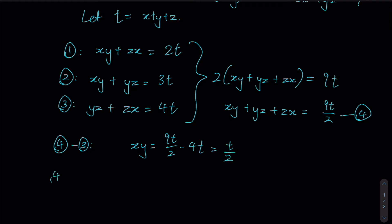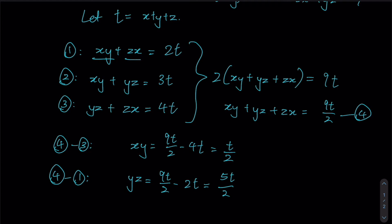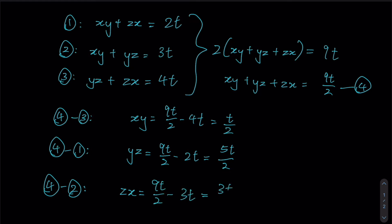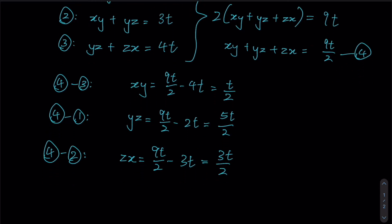Doing the same for the other two: subtracting equation 1 eliminates xy and zx, leaving yz, which equals 9t over 2 minus 2t, giving us 5t over 2. Subtracting equation 2 gives zx equals 9t over 2 minus 3t, which is 3t over 2.